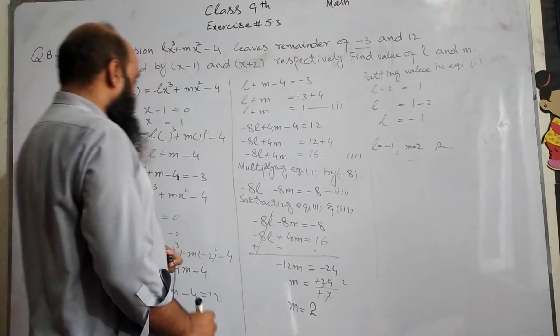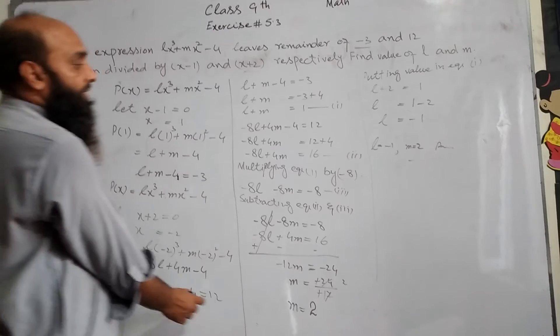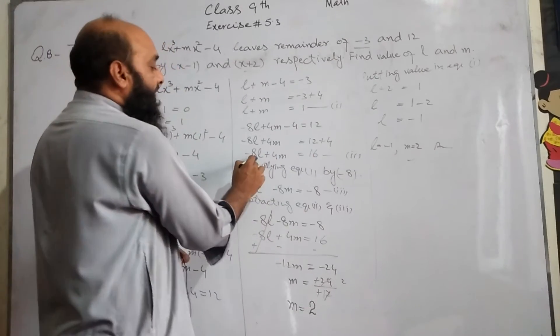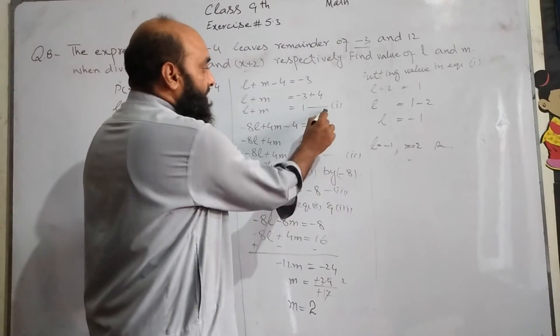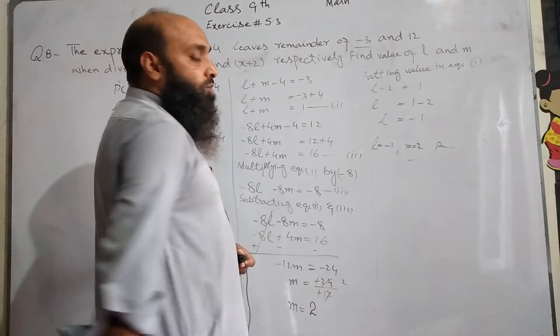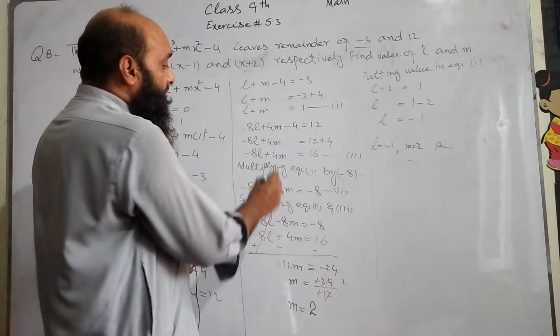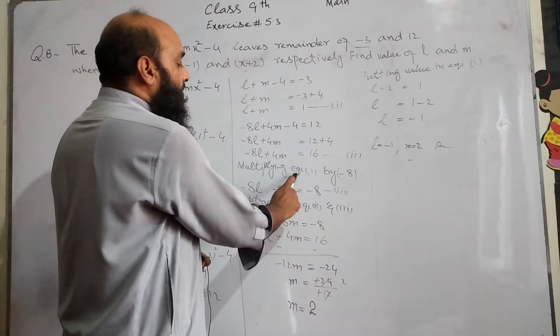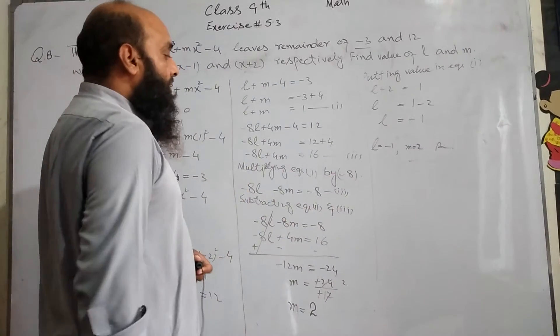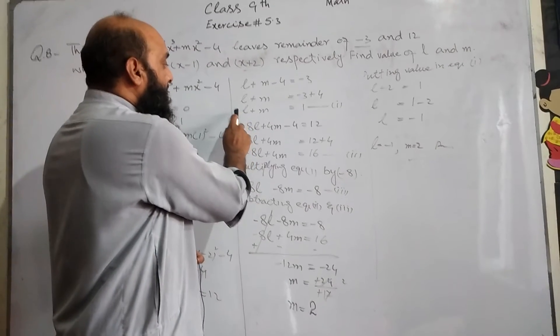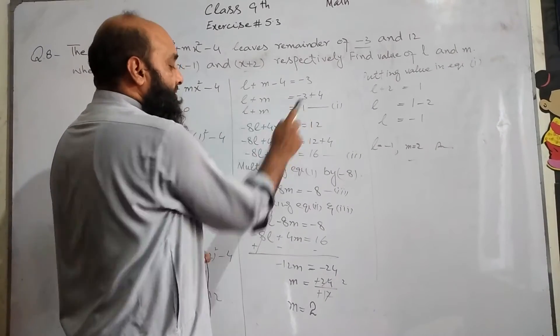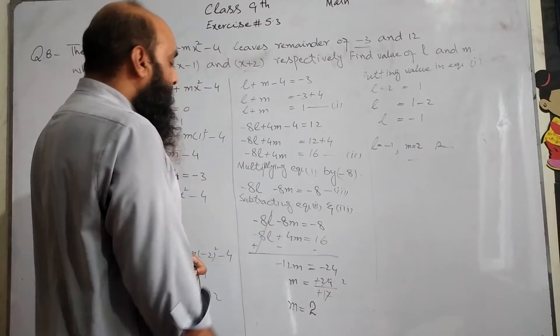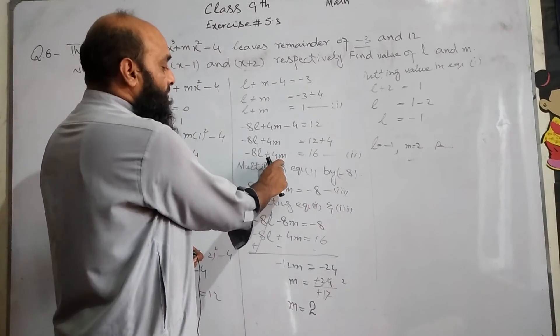We have equation 1 and equation 2. So we need to eliminate coefficients here. We multiply equation 1 by -8. Minus 8l minus 8m equals minus 8. We have equation 2 to subtract. So -8l minus 8m plus 4m equals -8 plus the other equation.